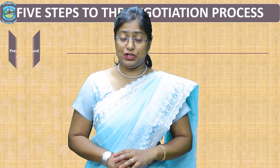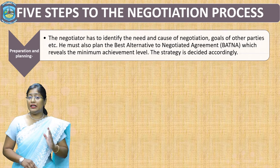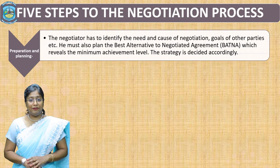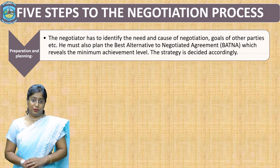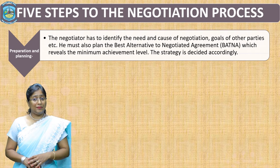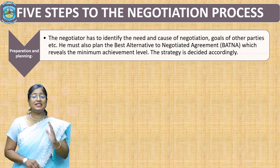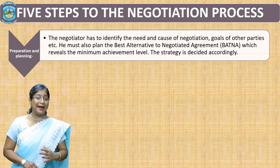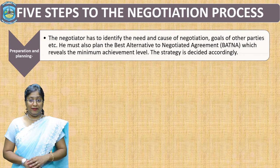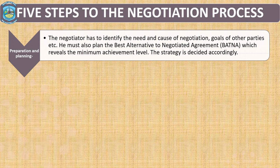Let us move on to another important topic: the steps to negotiation, or the process of negotiation. The first and foremost step is preparation and planning. The negotiator has to identify the need and cause of negotiation, the goals of the organization and the other parties. He must also plan the best alternative to a negotiated agreement — we call it BATNA — which reveals the minimum achievement level. On the basis of BATNA, the strategy is decided accordingly.